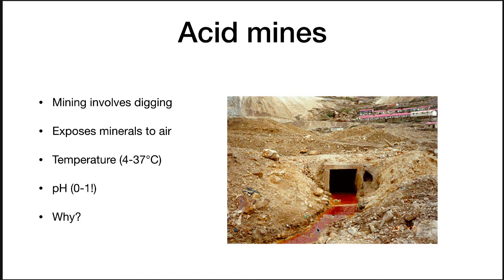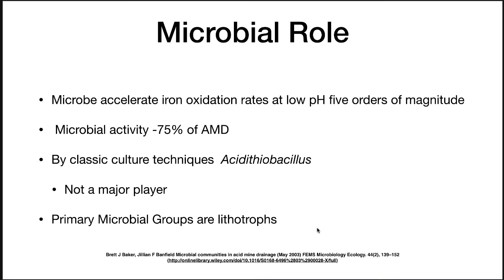When this water comes out, it's rust-colored and has a pH of 0 to 1. The question was why is this happening and is there anything we could do about it? Dr. Banfield's group received funding to investigate this. They found out there is a microbial role — microbes accelerate iron oxidation rates at low pH by 5 orders of magnitude.